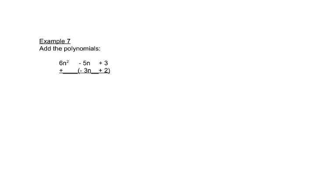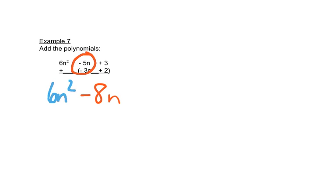This is another way to add polynomials — sometimes it's easier to do it vertically by matching like terms up and down. You can see easily that there's nothing to go with the 6n squared, so we just write 6n squared. Then the next two like terms give us negative 5 minus 3, which is negative 8. And then the last two go together to give us 5.